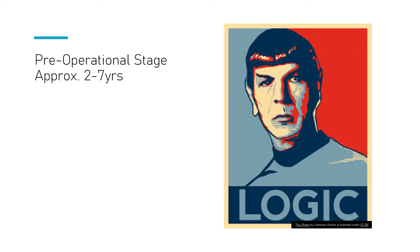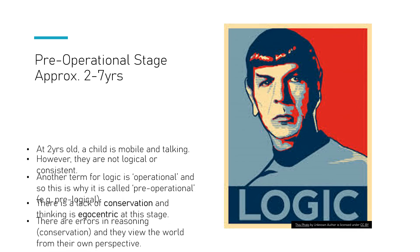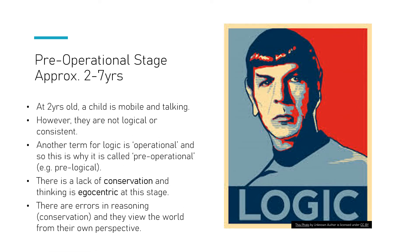The next of Piaget's stages is the pre-operational stage, which carries on from two years until about seven years. The term 'operational' refers to logic, so when we're talking about pre-operational, we're talking about a pre-logical stage. Not very nice to the kids, but that's what Piaget was saying — a two-year-old might have all that sensorimotor development, but actually they're not logical, they're not consistent, and they don't understand things.